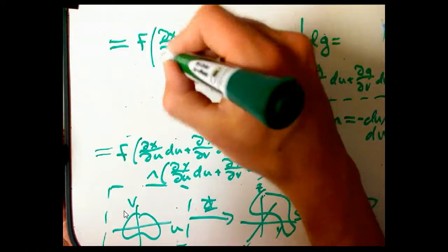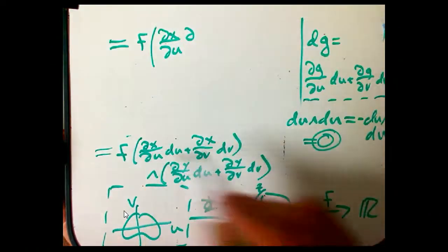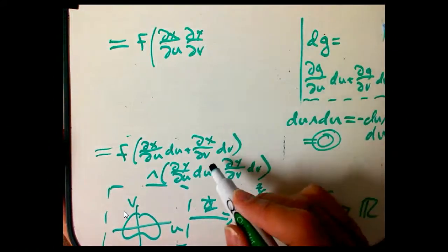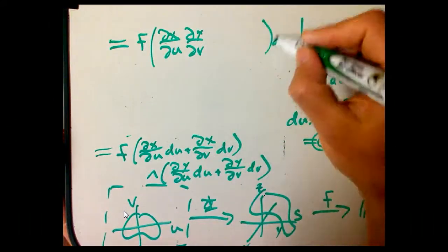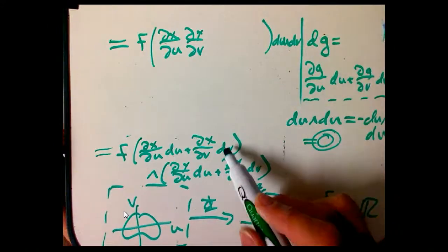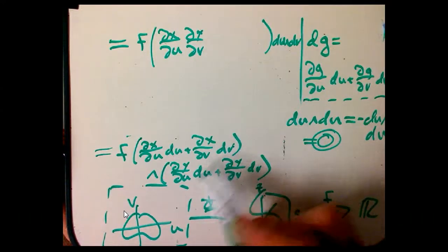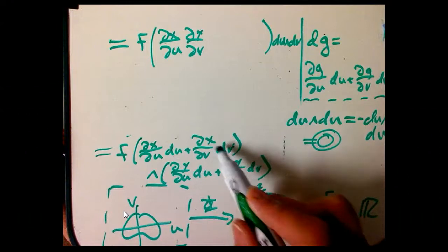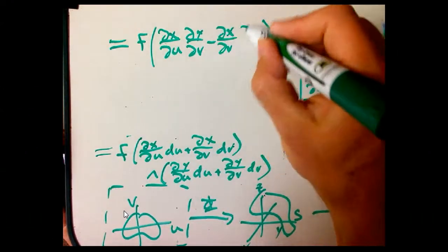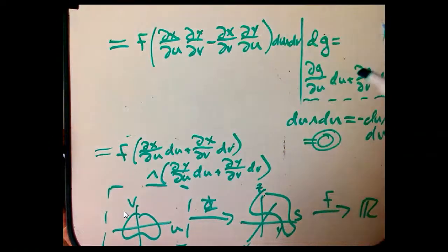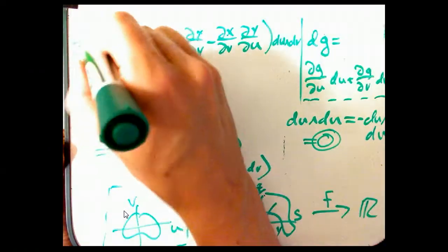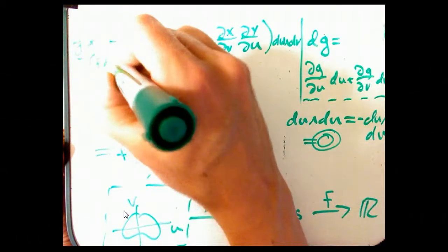And so I'm going to get dx du from this dy dv times du wedge dv. And now I'm going to get something here, I'm going to get a dv wedge du term. But hey, I can think of that as minus du wedge dv. So I'm going to get minus dx dv dy du. So that is φ star of f dx wedge dy.